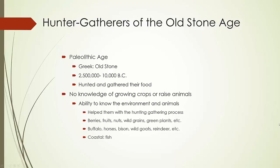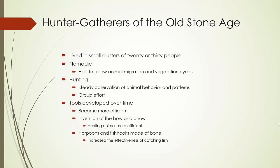With them spreading from their original hunting ground, they had to know their environment and the animals in that environment in order to survive. Knowing their environment helped them to gather berries and fruits, and helped them hunt fish and buffalo depending on the geographical location. Like Homo sapiens sapiens, they lived in small clusters of maybe 20 or 30 people.